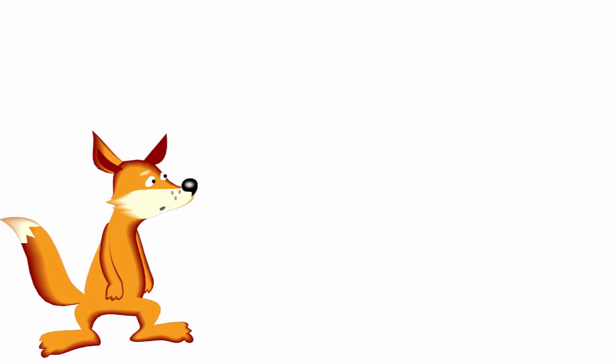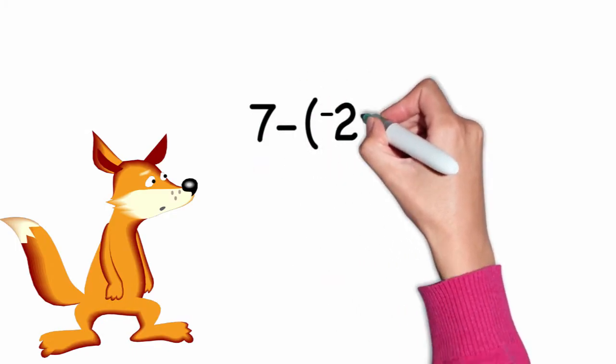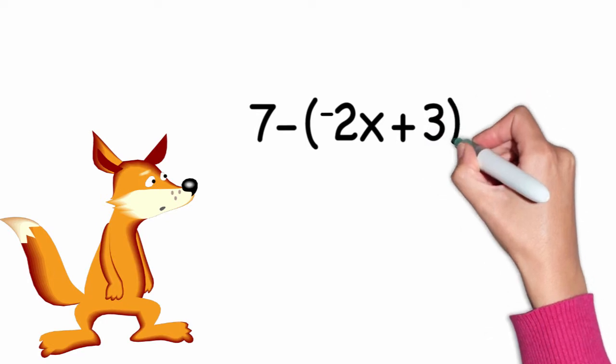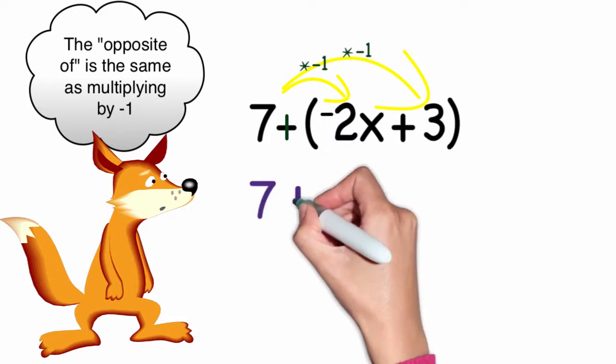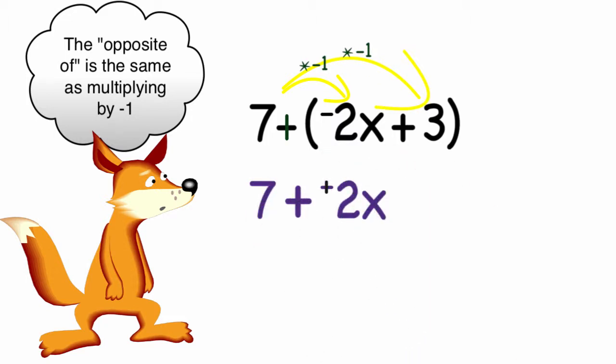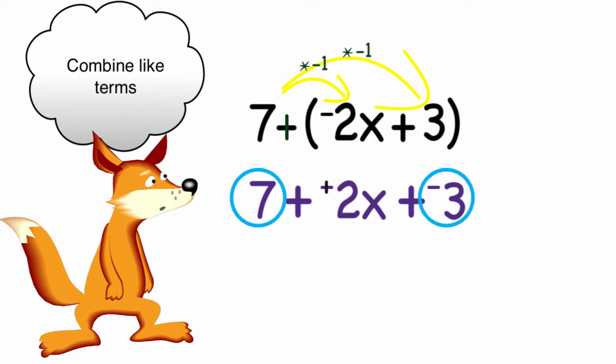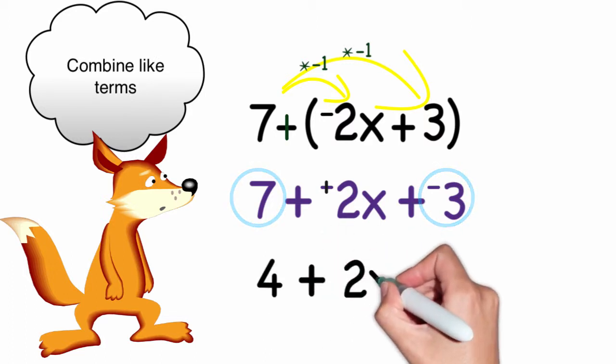So what if I had 7 minus the quantity negative 2x plus 3? Well, that would be 7 plus the opposite of negative 2x plus 3, or 7 plus 2x plus negative 3. At that point, we would combine like terms, and I would get 4 plus 2x.